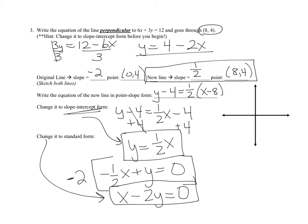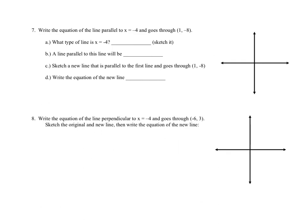Sketching both lines: the original has slope negative 2 and y-intercept 4, going steeply downward. The perpendicular line goes through (8, 4) with slope 1/2, angled upward. Looking at the sketch, the perpendicular line hits 0 as its y-intercept, and the slope of 1/2 looks correct.